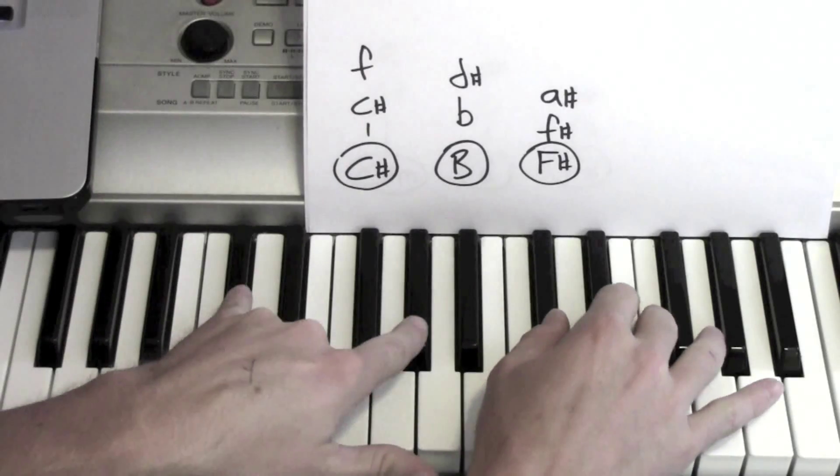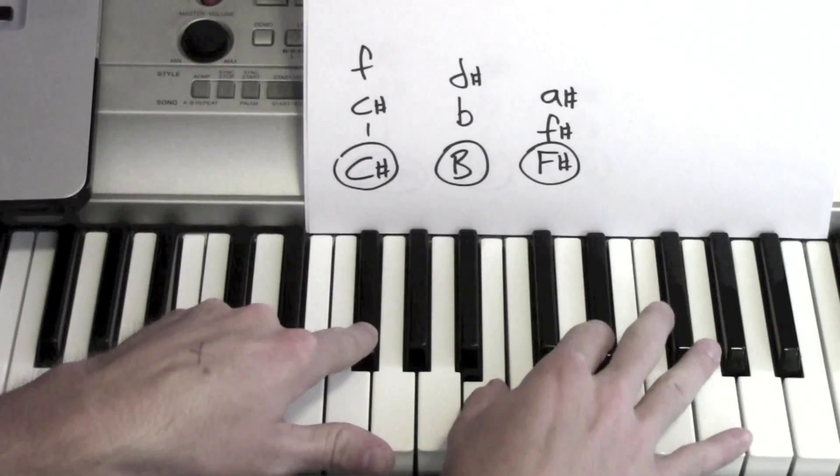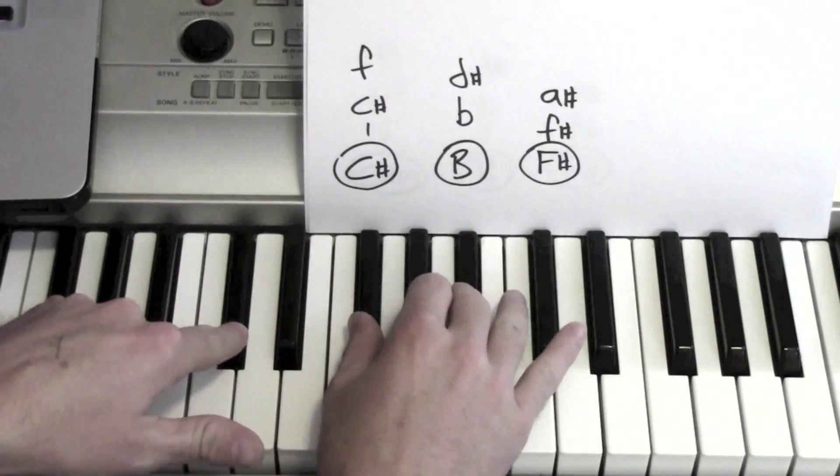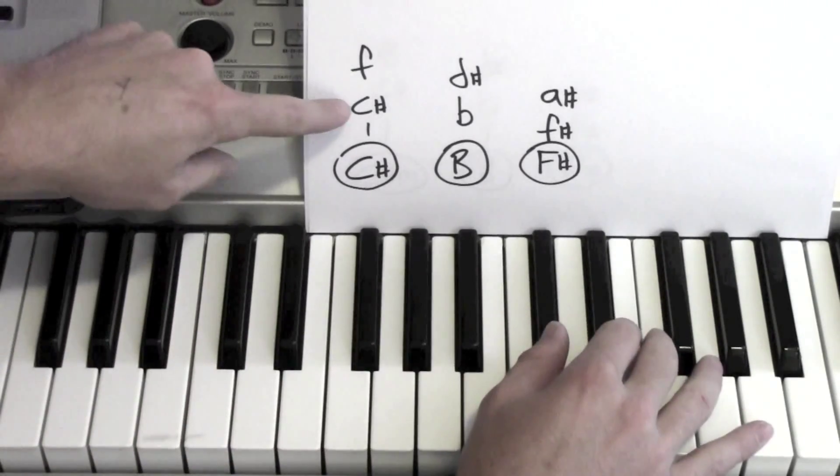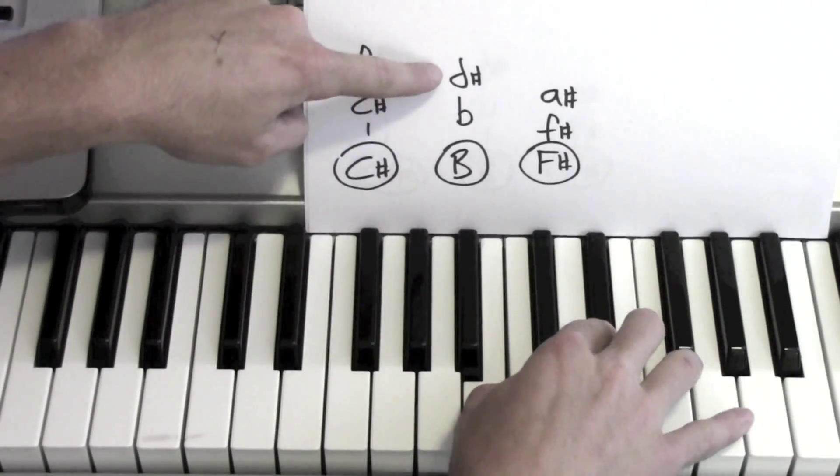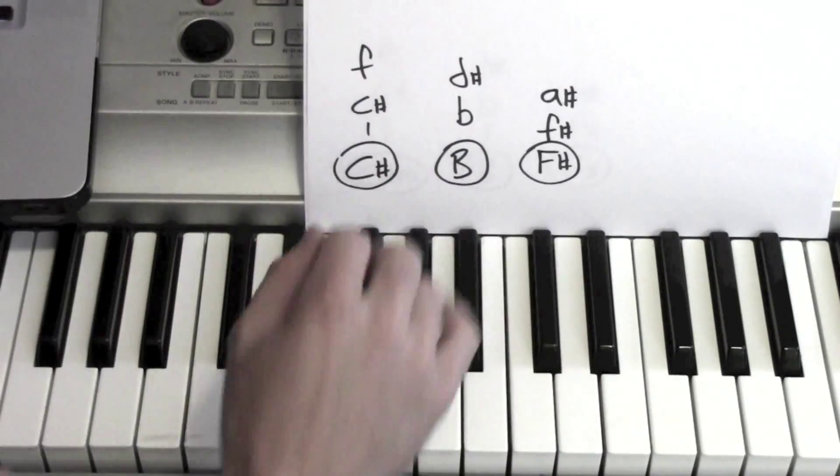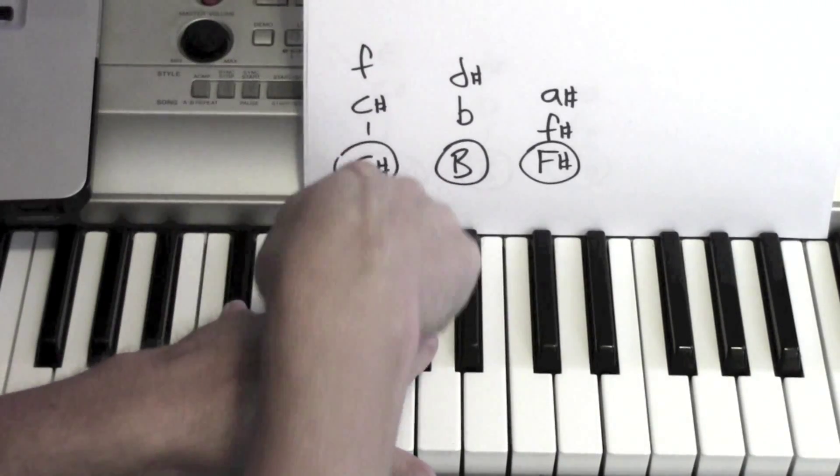Alright, so the verse part. My right hand is playing C sharp and F. That's the first one. Then to a B and D sharp. Then to an F sharp and an A sharp. My left hand is playing those for C sharp.